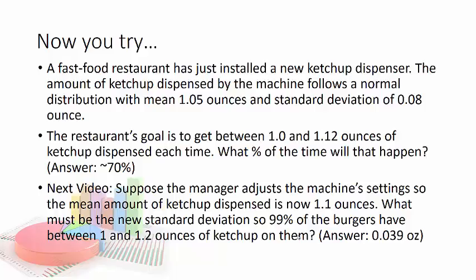On the next video, I'm going to tell you how we're going to answer the question. Suppose the manager adjusts the machine setting so the mean amount of ketchup dispensed is now 1.1 ounces. What must be the new standard deviation so 99% of the burgers have between 1 and 1.2 ounces of ketchup on them? So on the next lesson, we're going to go backwards from percents to values.